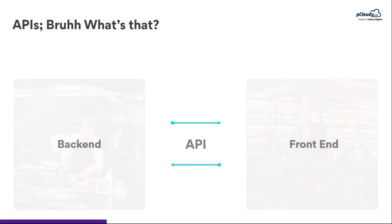In software, we have a front end and a back end. Whenever we perform an operation, the request goes to the back end in the form of an API and we get a response. The back end processes and validates the data, and the front end displays it in an appropriate format — like a tabular view or some content. This is the general flow of API.